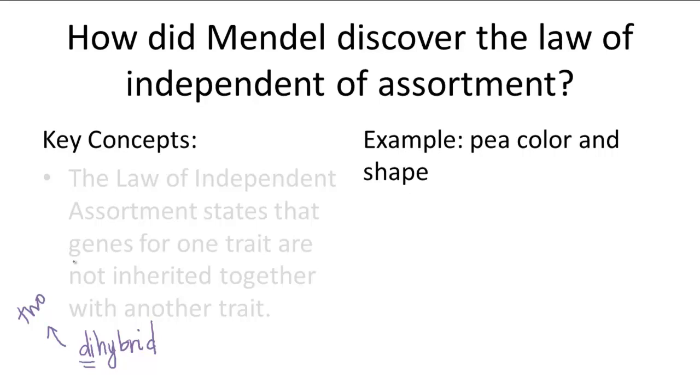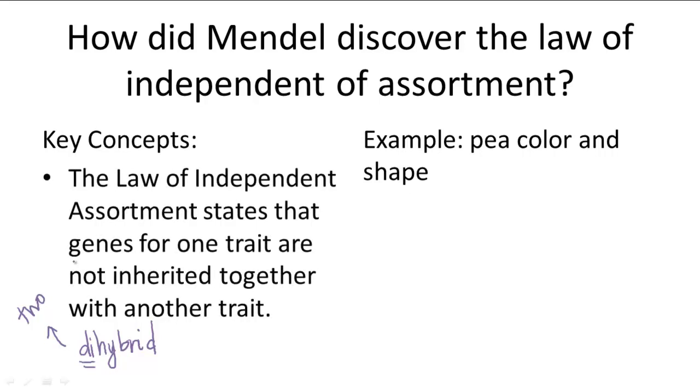So Mendel's third principle is called the law of independent assortment, which states that genes of different traits are inherited separately. For example, in Mendel's dihybrid cross, he examined pea color and pea shape. So these are the two traits that he focuses on in his dihybrid cross. And peas can either be yellow or green, round or wrinkled.